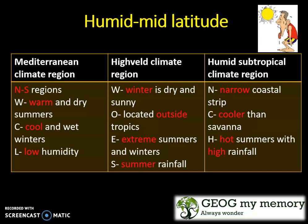The High Veld climate region has winters which are dry and sunny. It is located outside the tropics, has extreme summers and winters, and summer rainfall. To remember this, you can use the acronym WOES.